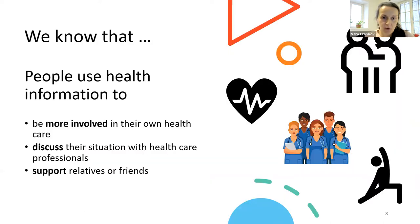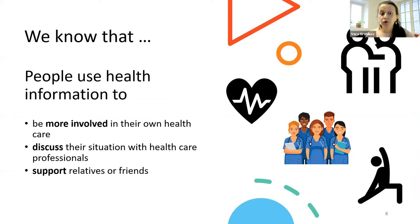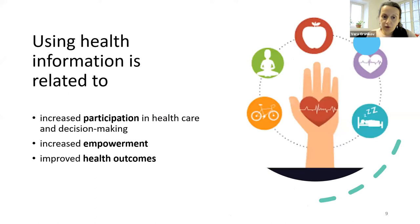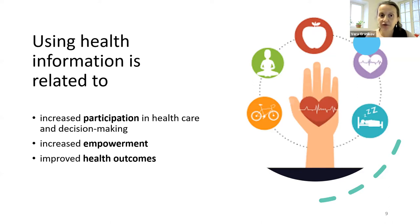We did a very large systematic literature review, where we pulled together different studies on health information and how regular people — the public — use health information they find online. What we found was that people definitely turn to the internet to find health information because they want to be more involved in their own healthcare. They also often want to discuss their particular situation with healthcare professionals, so they go online before seeing their doctor to prepare questions. And people also look for information to support relatives or friends. Using health information is related to increased participation in one's own healthcare and decision-making. People generally feel more empowered, and there is evidence of improved health outcomes connected to health information literacy.